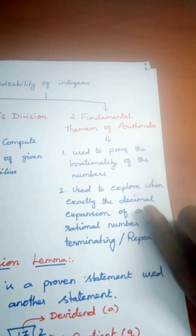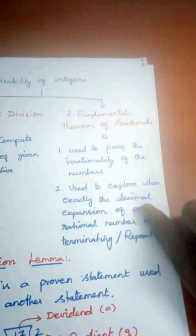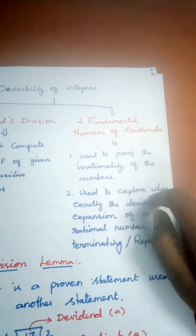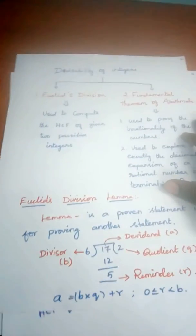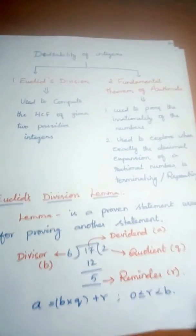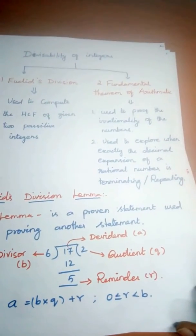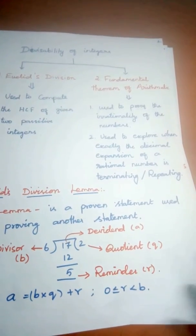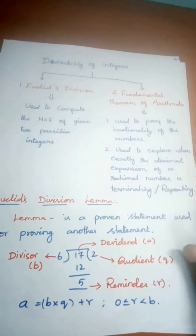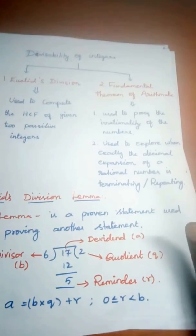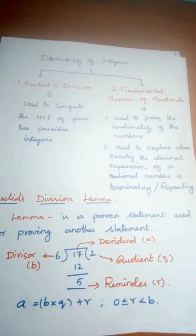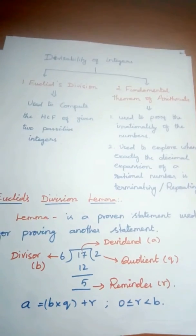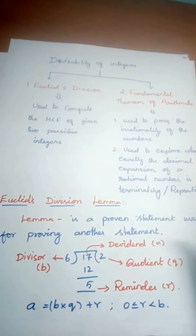What is meant by 'lemma'? A lemma is a proven statement used to prove another statement. That is, a lemma is an already-proved statement which is used to solve or prove another statement.